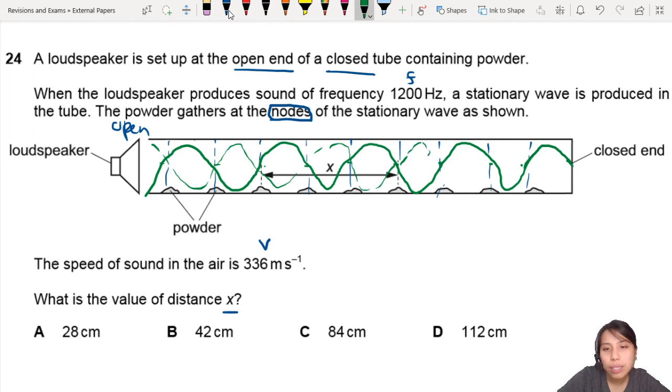But the one thing I want you to notice is, these are what we call loops. And each loop has a certain distance. So this is what we call one loop. That is between node and node, or anti-node and anti-node. They are the same thing.